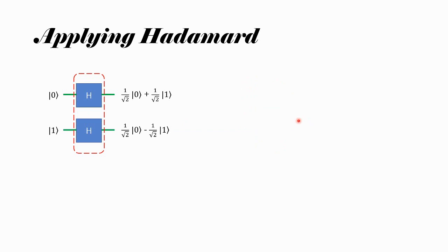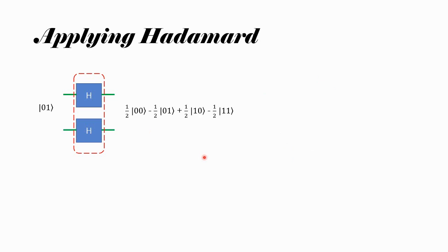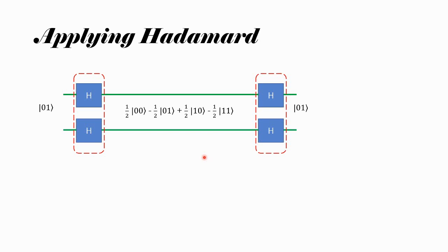Now let us look at something different. Instead of |00⟩, we will look at |01⟩. Everything should be similar except for the minus sign from the |1⟩ qubit. So we get a very similar distribution: |00⟩, |01⟩, |10⟩, |11⟩, with amplitude 1/2 for everything. But two of these have a phase of minus 1 — that happens because anything tensored with the |1⟩ component carries that minus sign. And again, applying Hadamard gates once more gives us |01⟩ back.